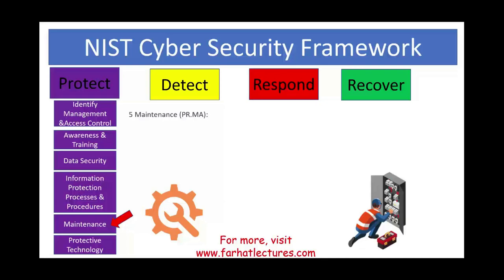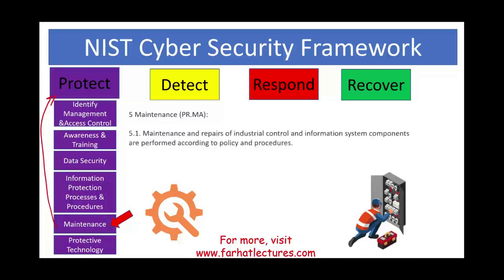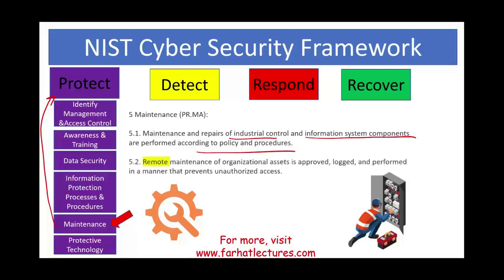Maintenance is also part of the protection function. Maintenance and repair of industrial controls and information system components are performed according to policies and procedures — not haphazardly. You don't just randomly call someone for help. You have policies and procedures, and especially if that maintenance is remote, you need to vet who they are. Maintenance of organizational assets is approved ahead of time, logged, and performed in a manner that prevents unauthorized access — whether logical or physical, remote or in-person.